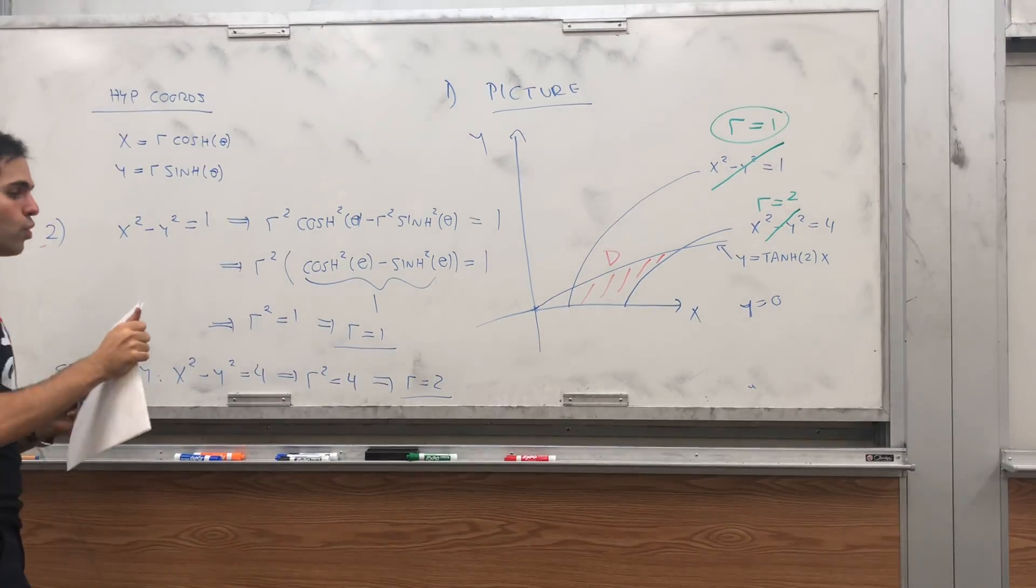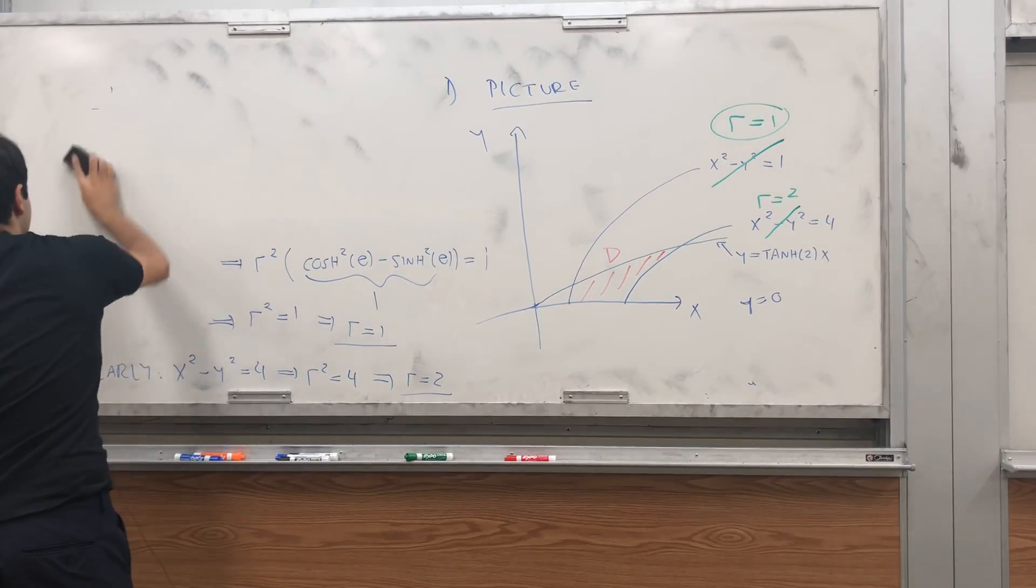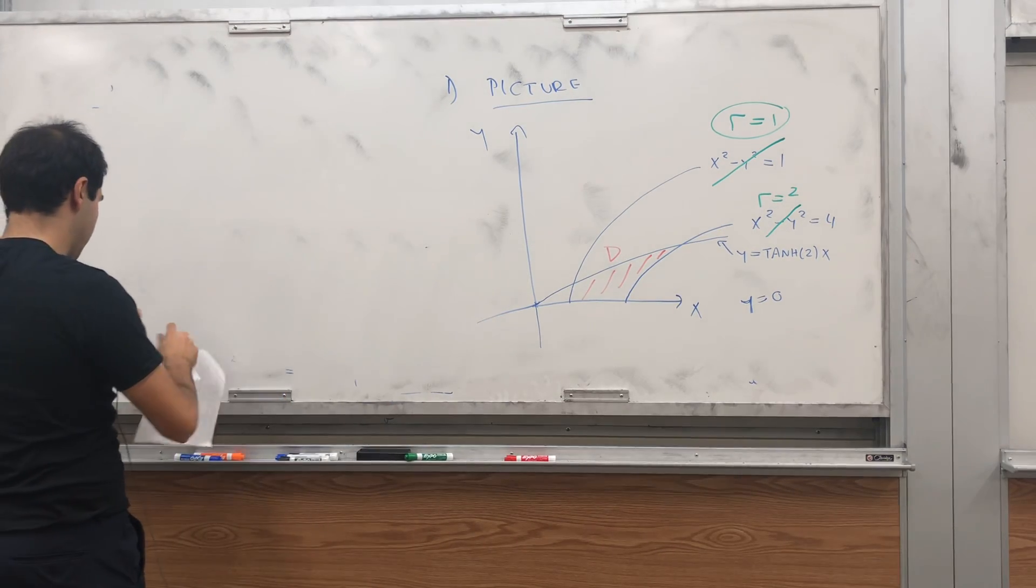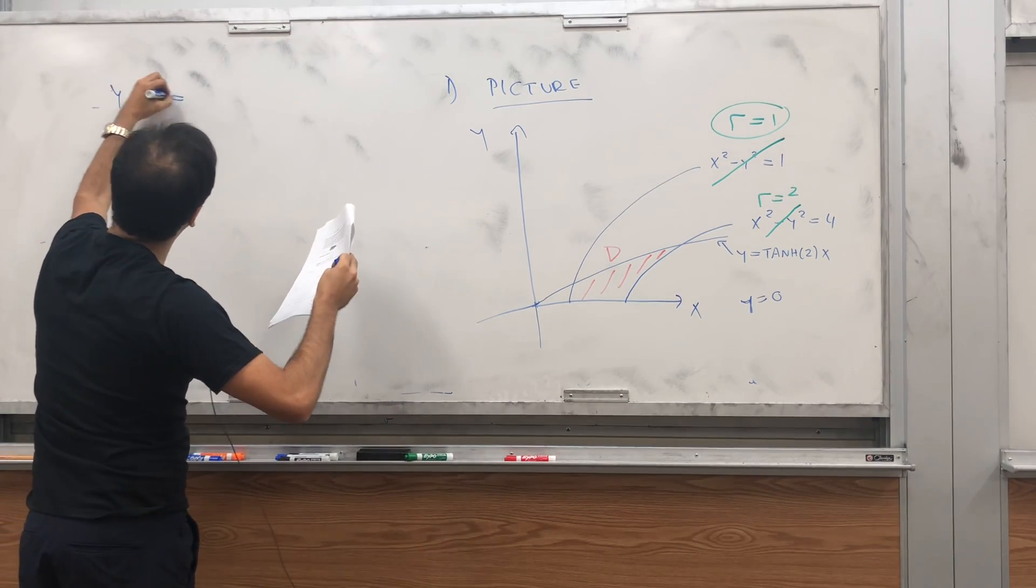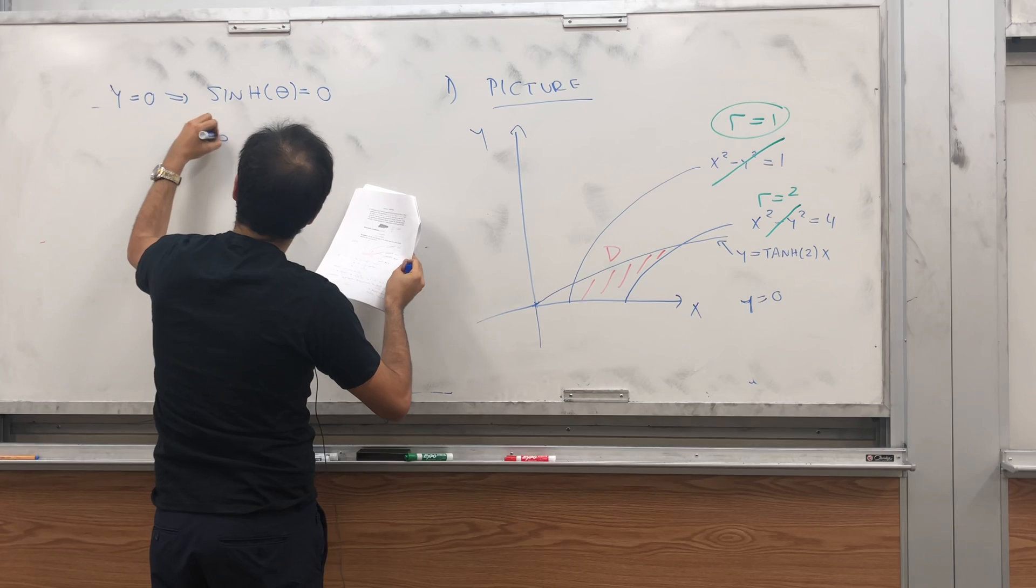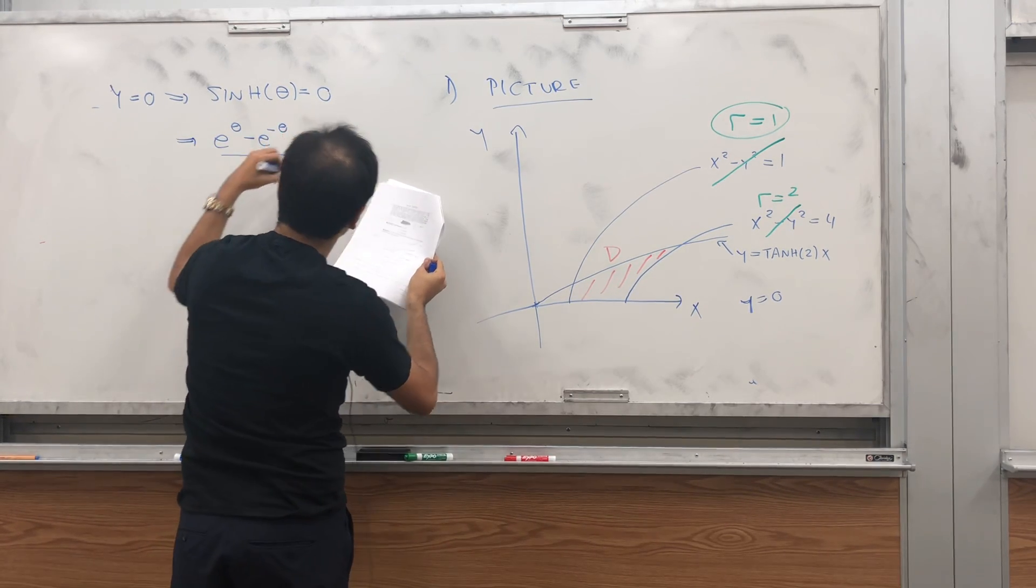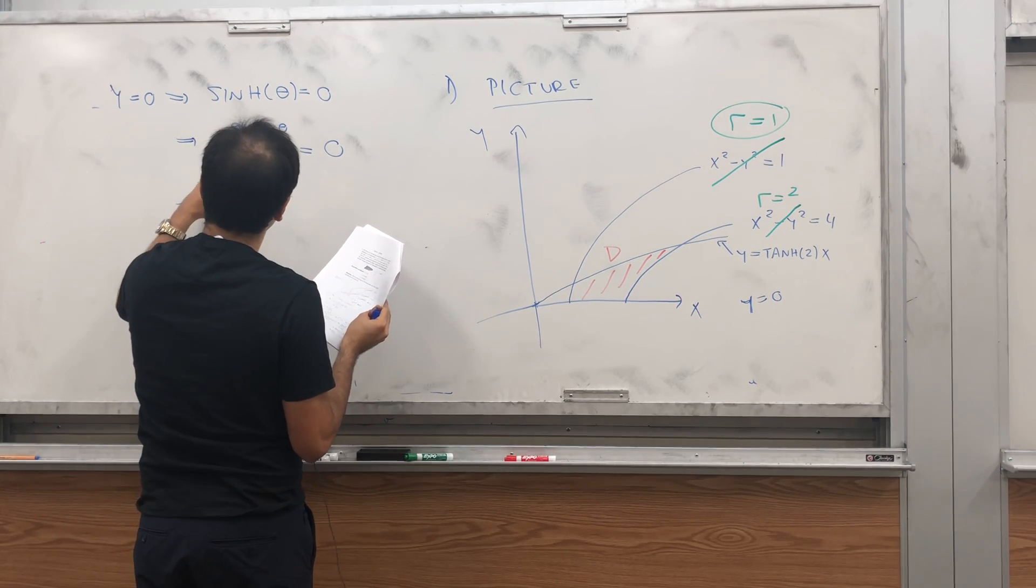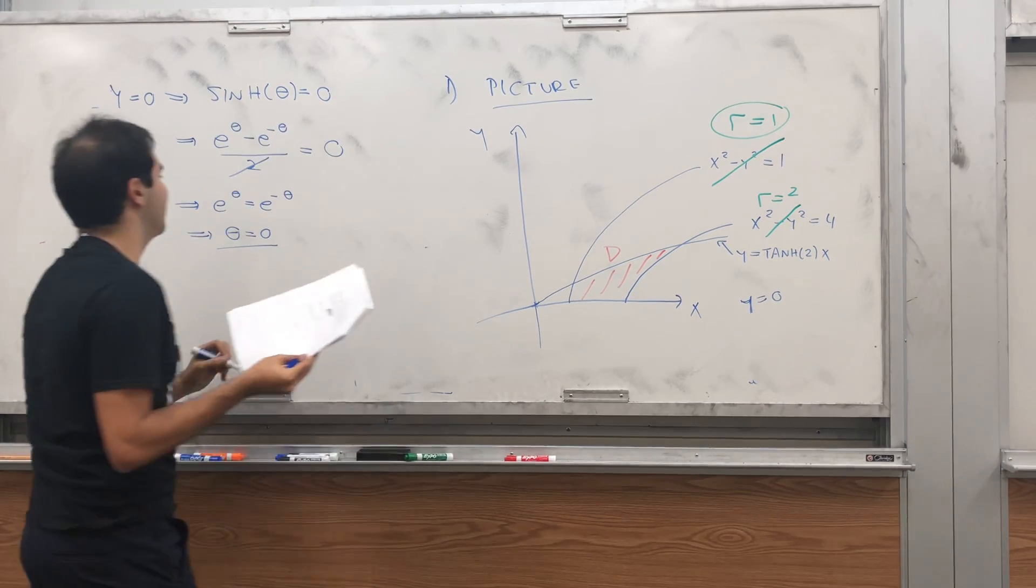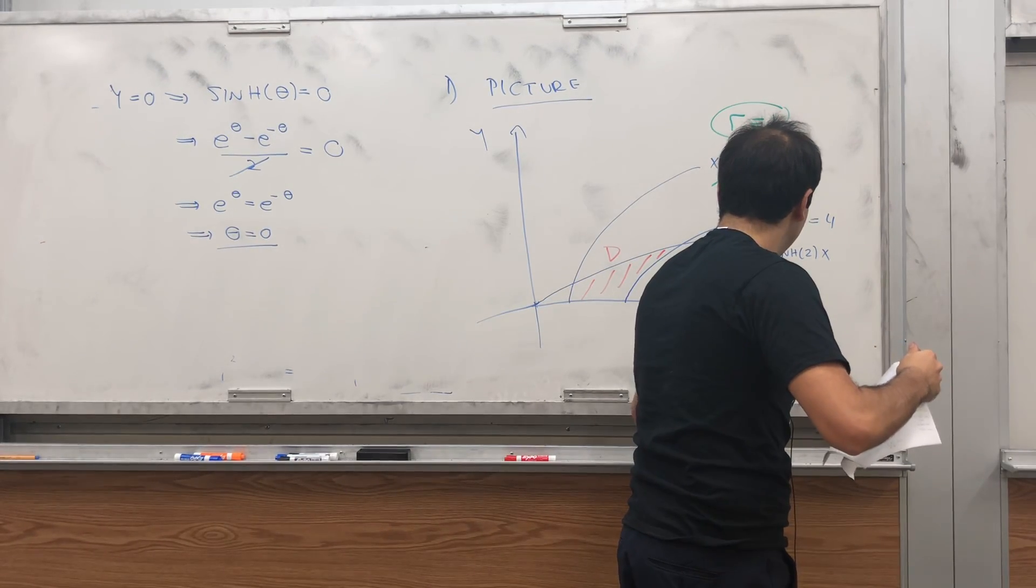And now, let's see what happens to our lines. So, well, let's see. y equals to 0. That gives you sinh of theta equals to 0. So, sinh is e to the theta minus e to the minus theta over 2 equals to 0. And so, e to the theta equals to e to the minus theta. And the only theta that makes this work is 0. So, this becomes theta equals to 0.